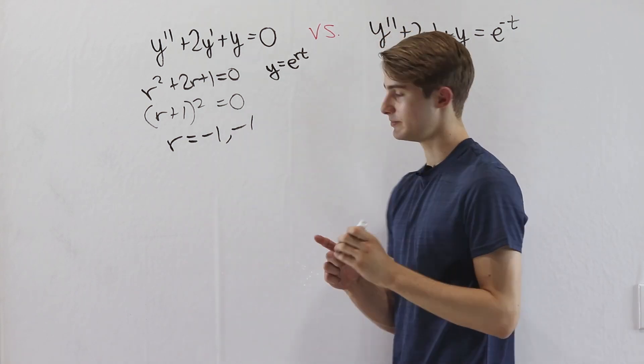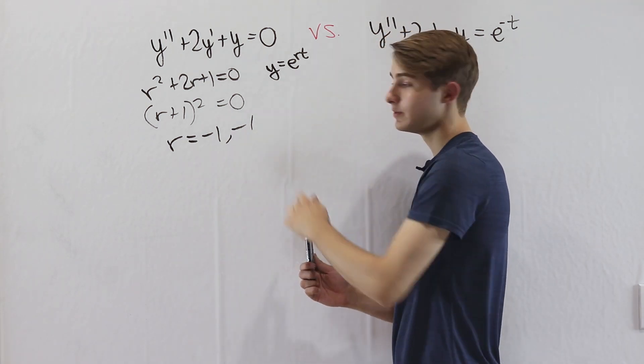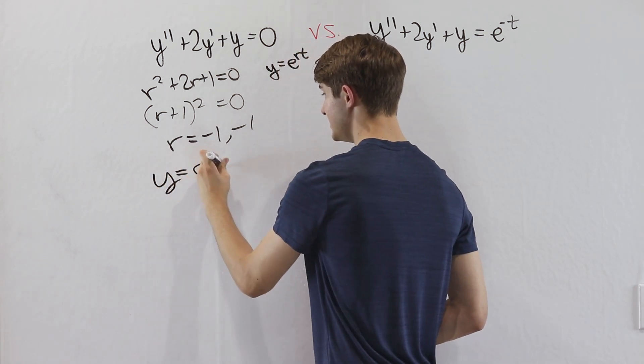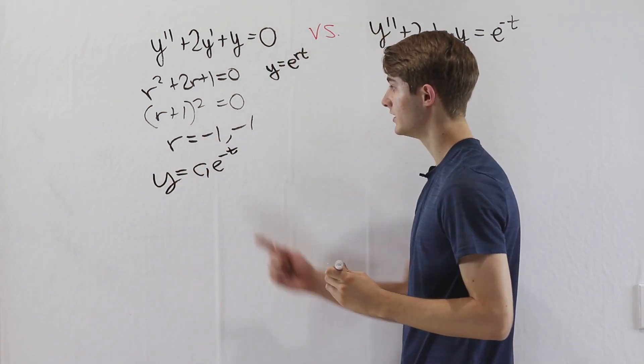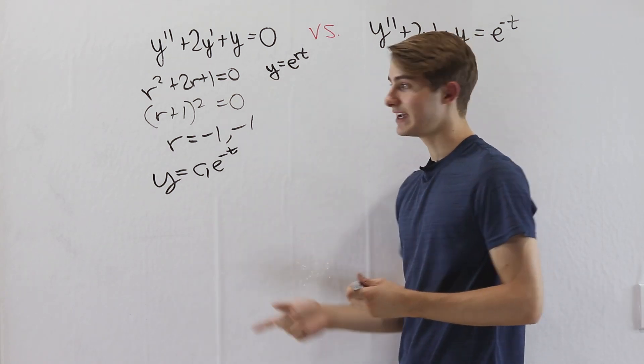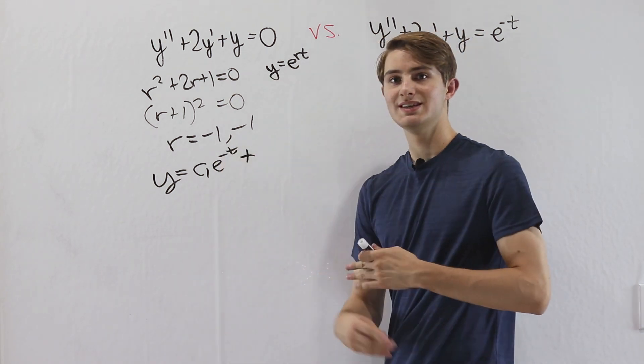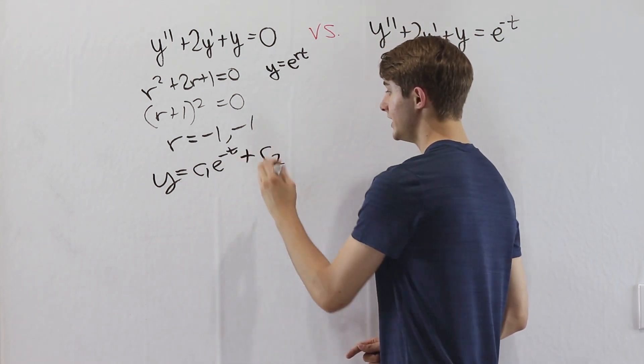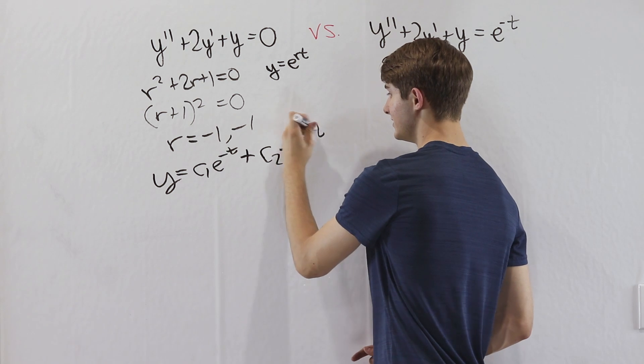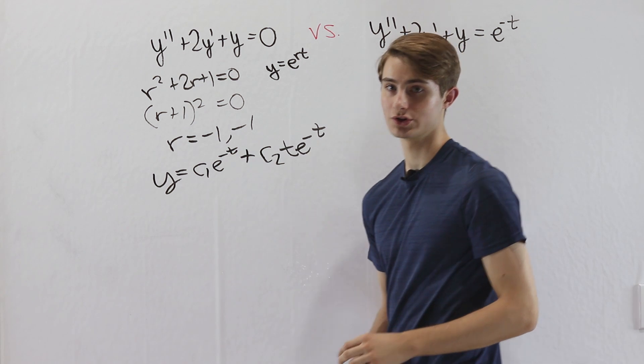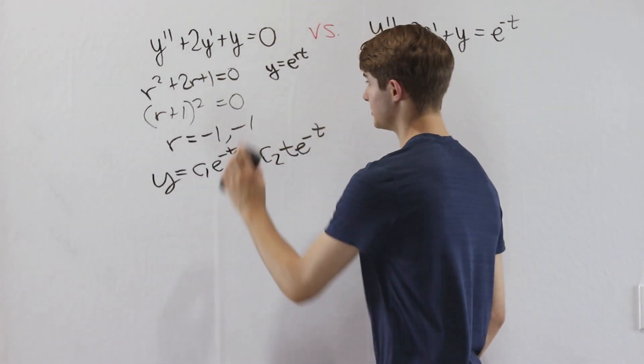You can watch my video on repeated roots in the description, but what this will give us is that y equals c1 e to the negative t, so we plug in this negative 1 to e to the rt. But then for the second solution, we can't just put c2 e to the negative t because we already did that. So we have c2 and then we multiply by t e to the negative t. So this is actually the entire solution to this first equation here, nice and simple.